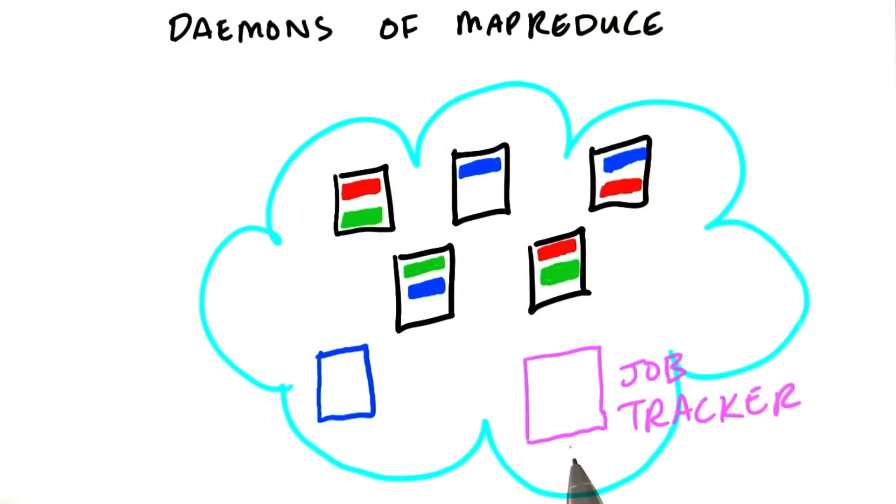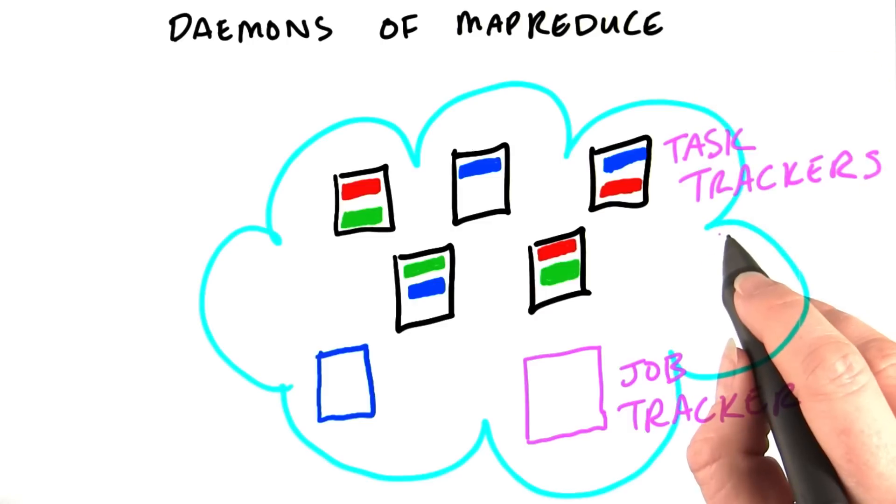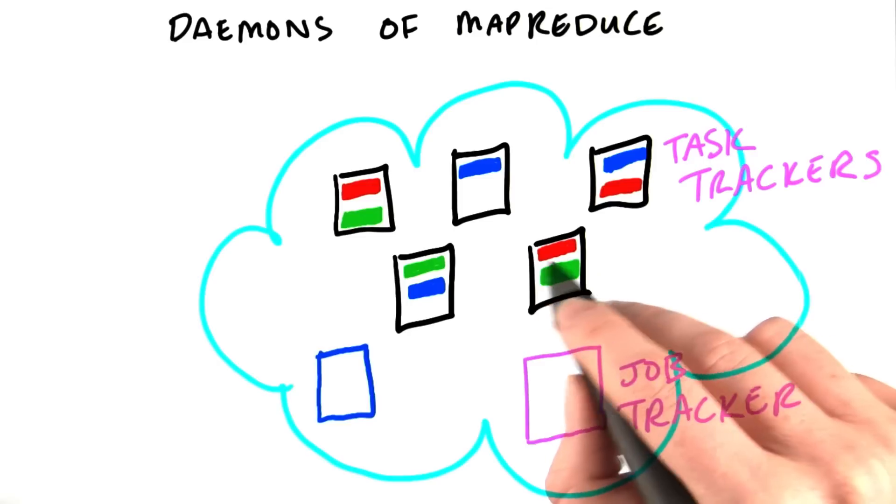When you run a MapReduce job, you submit the job to what's called the job tracker. That splits the work into mappers and reducers. Those mappers and reducers will run on the other cluster nodes. Running the actual MapReduce tasks is handled by a daemon called the task tracker. The task tracker software will run on each of these nodes.